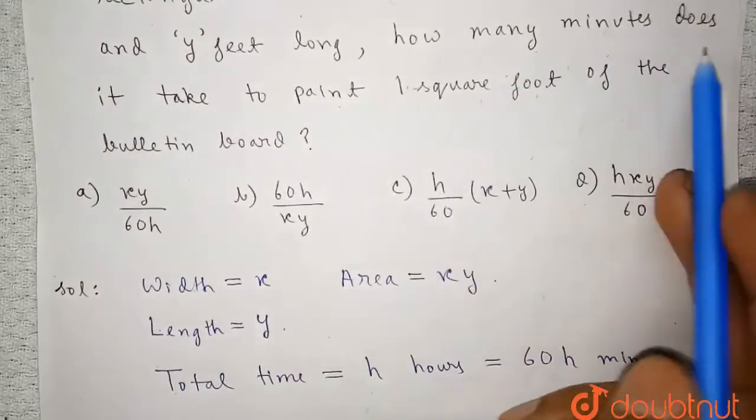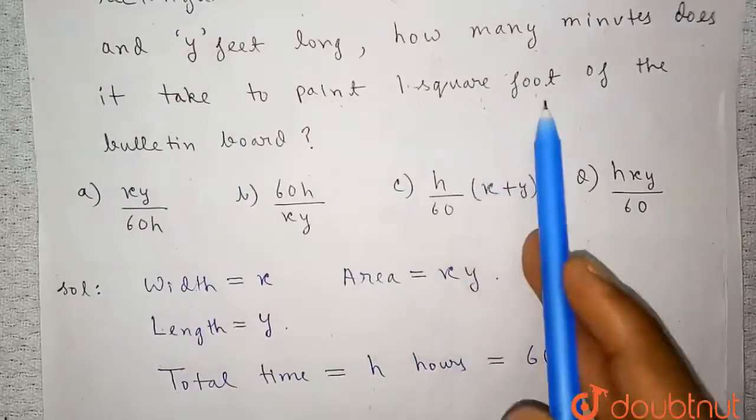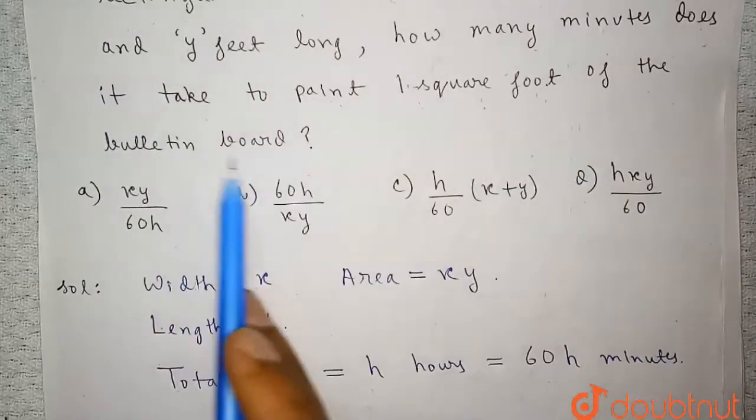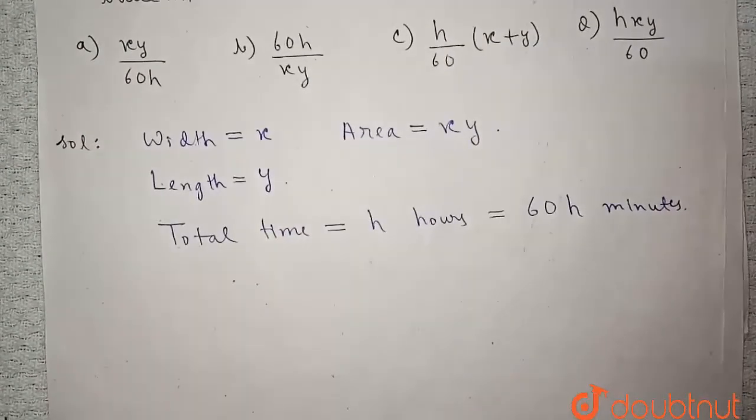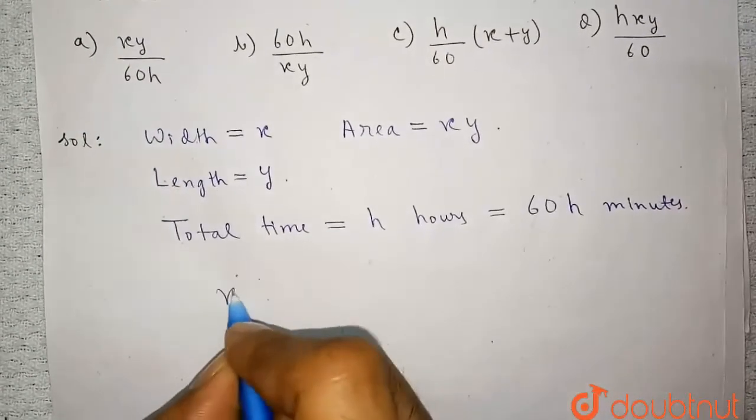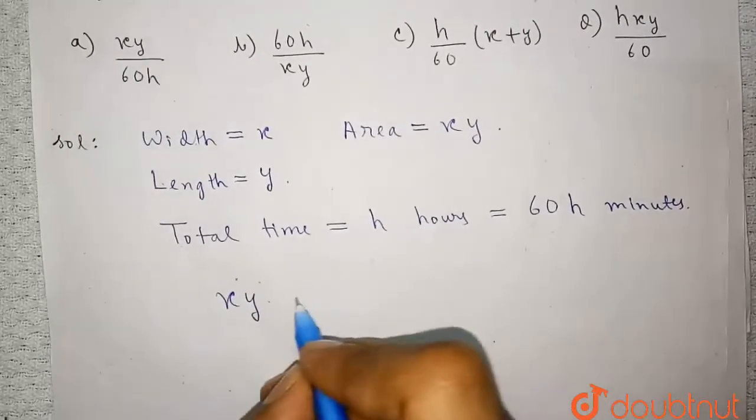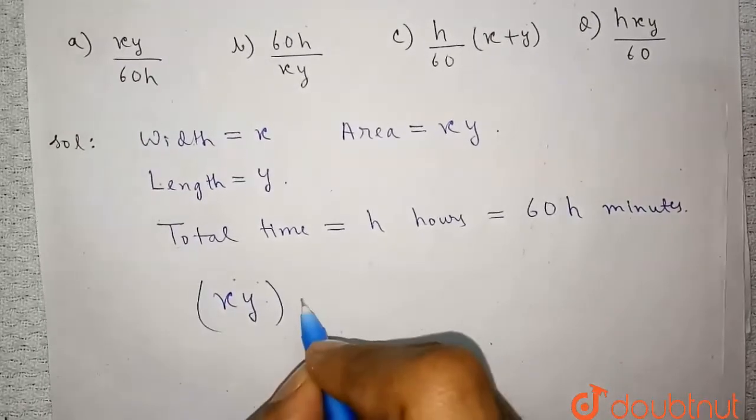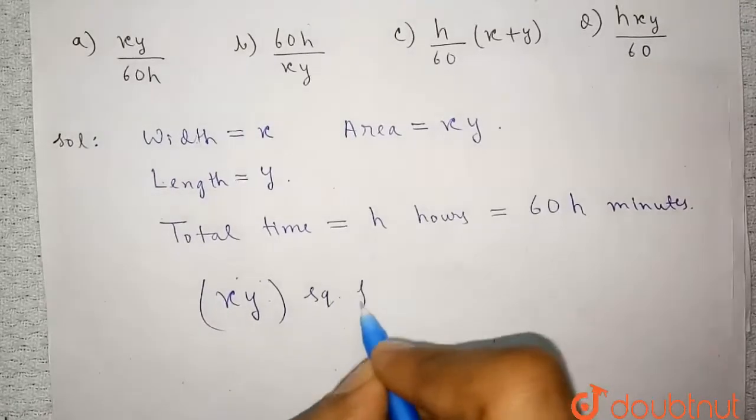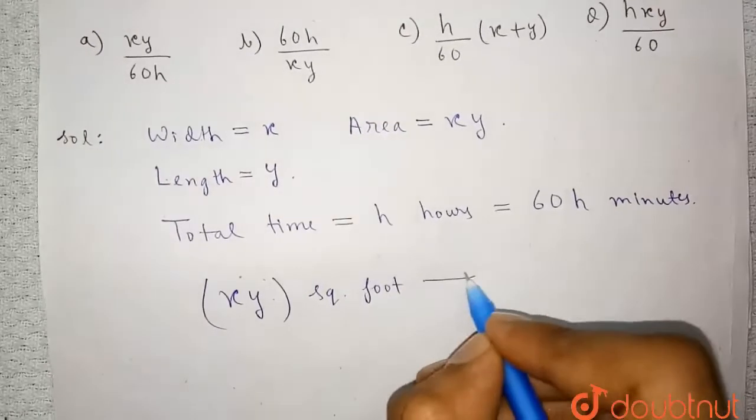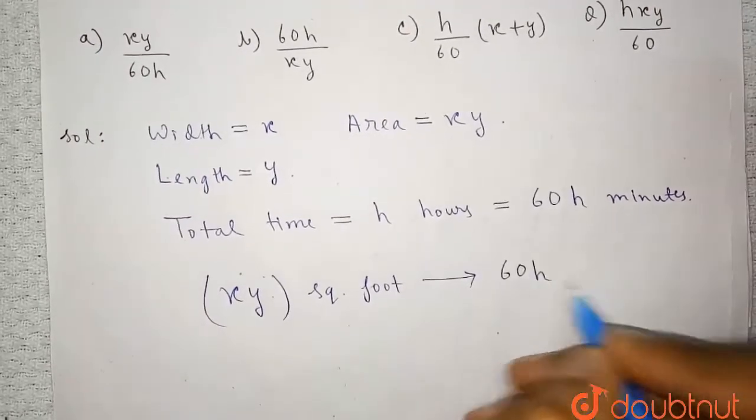It is asked how many minutes does it take to paint one square foot of the bulletin board? So to paint XY square foot, it takes 60H minutes.